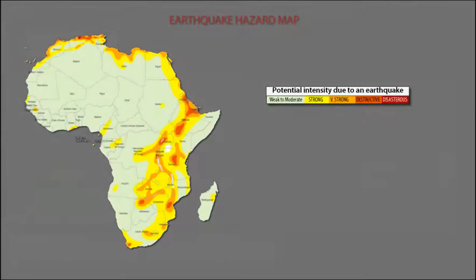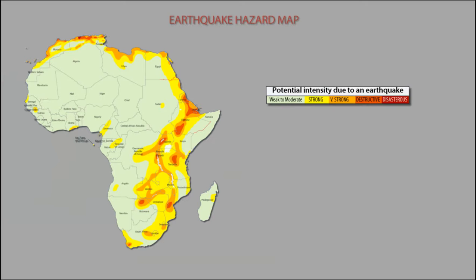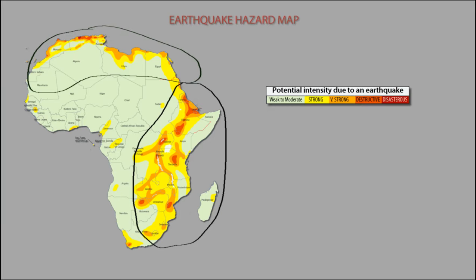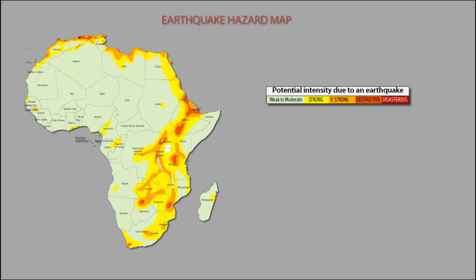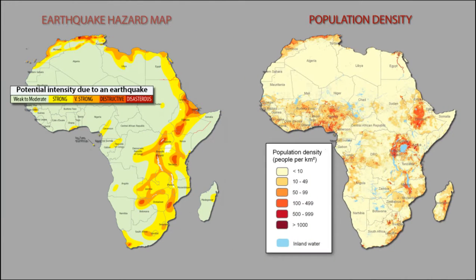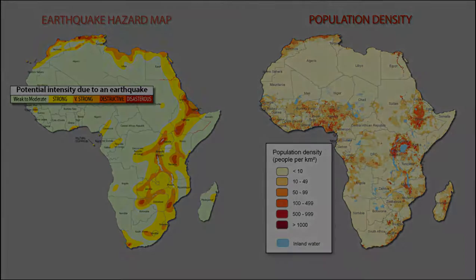As shown in this earthquake hazard map, the Atlas Mountains, Mediterranean coastal area, and the East African rift system are the regions of highest hazard. Progressive concentration of population in urban areas within these regions have increased the potential impact of large future earthquakes. Promoting earthquake resilience through building codes, emergency management, and public education are critical to sustaining economic development in Africa.